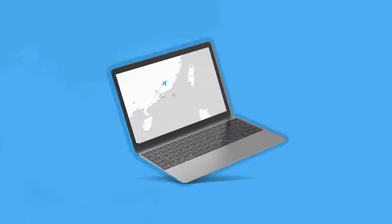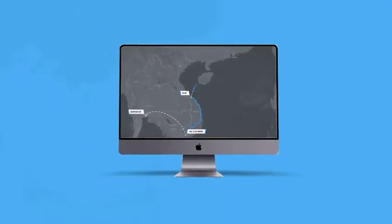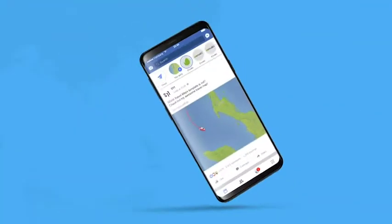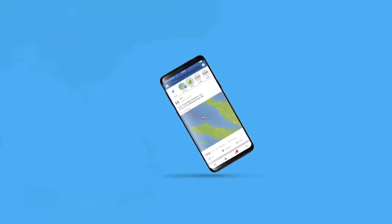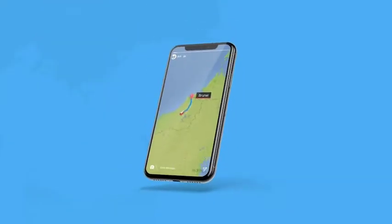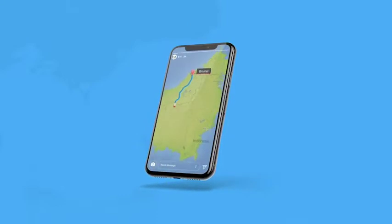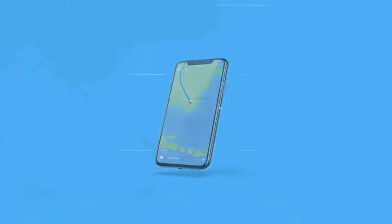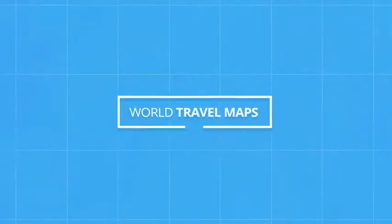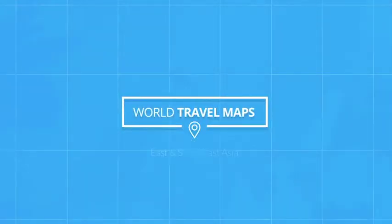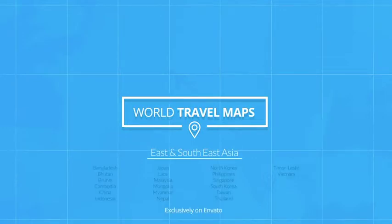So whether you need it in full HD, 4K, square format, or want that vertical look for your Instagram stories, we have you covered. That's World Travel Maps for East and Southeast Asia, helping you tell your stories and taking your video content to the next level.